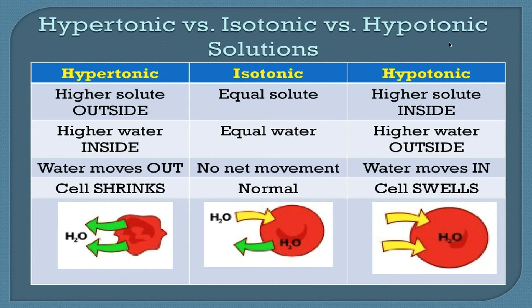Tonicity is simply a measure of solute concentration. In a hypertonic solution, solute concentration is higher outside of the cell, and water concentration is higher inside, causing water to move outside to regulate solute balance — the cell will then shrink. In an isotonic solution, everything is equal and there is no net movement of water. In a hypotonic solution, solute concentration is higher inside the cell and water concentration is higher outside, so water moves in — causing the cell to swell. A simple rule: in hypertonic, solutes are higher outside and water moves out; in hypotonic, solutes are higher inside and water moves in.